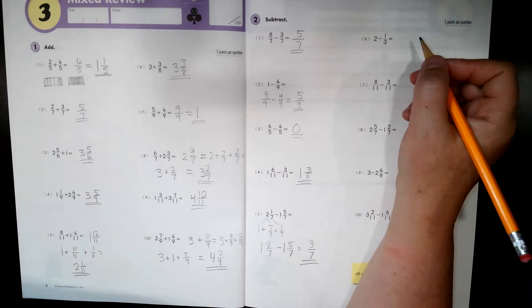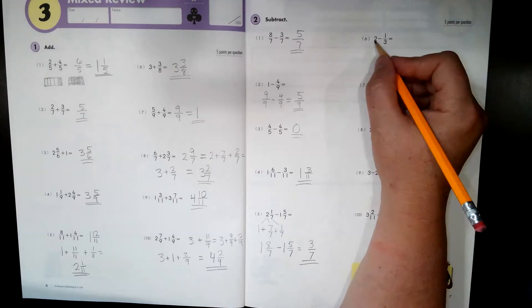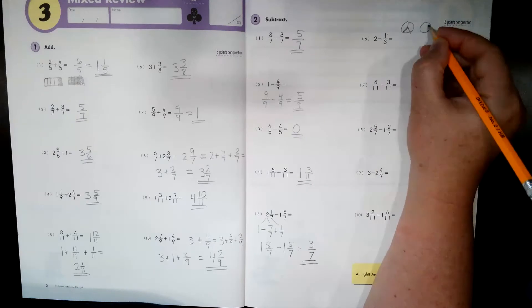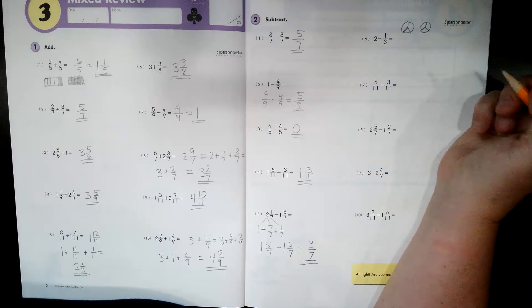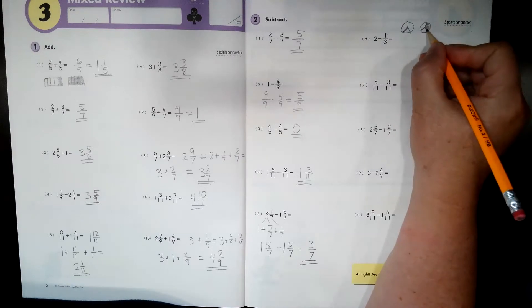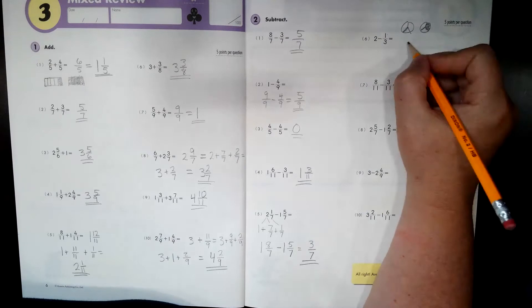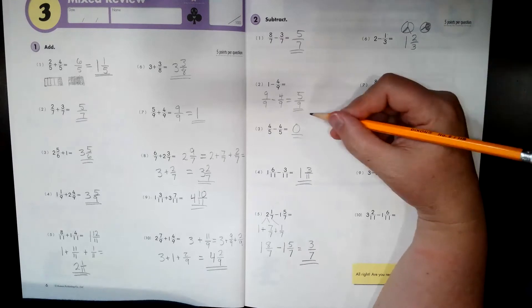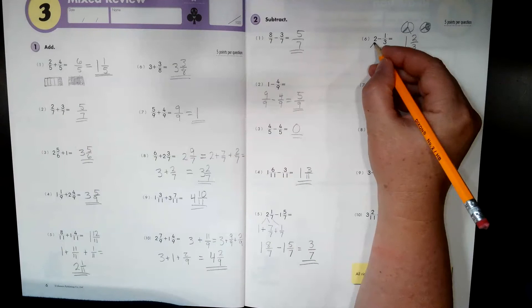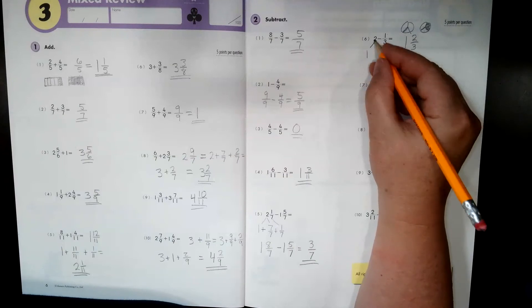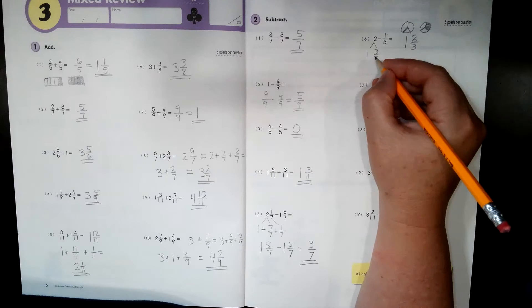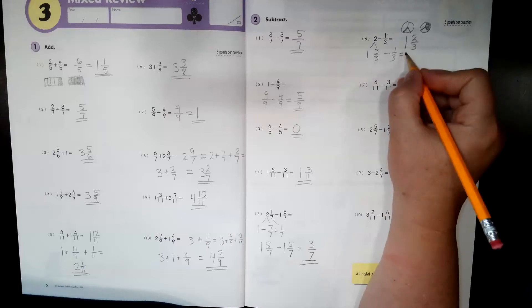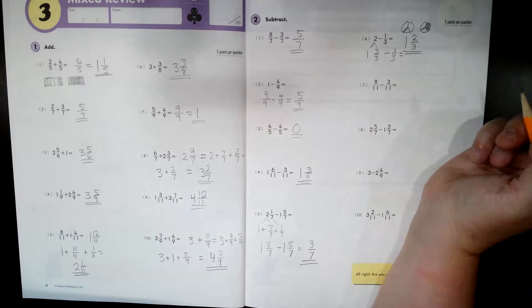Two minus one third. Oh no. Can you draw a model? Of course you can. Draw two things and break them into three parts. Now I'm going to take away one of those three parts. And that shows me what's left. One whole and two of three parts. I can do that without having to write out the equations. I can also break two into a number one and three thirds. Because I need three parts. Minus one third. And that is equal to one and two thirds. That's our final answer.